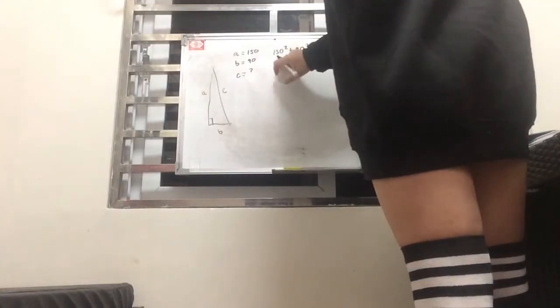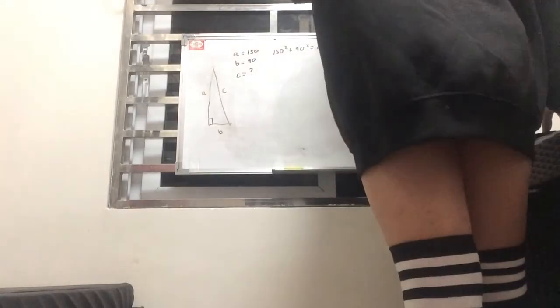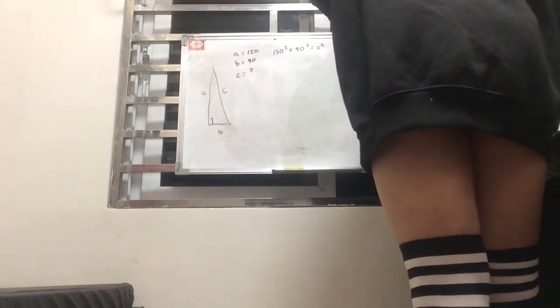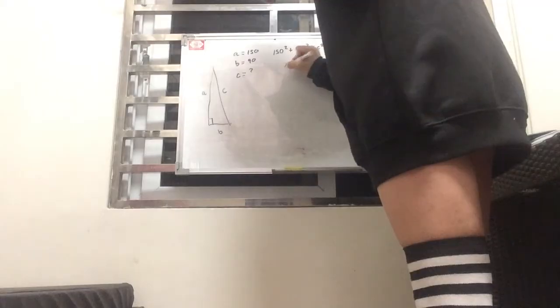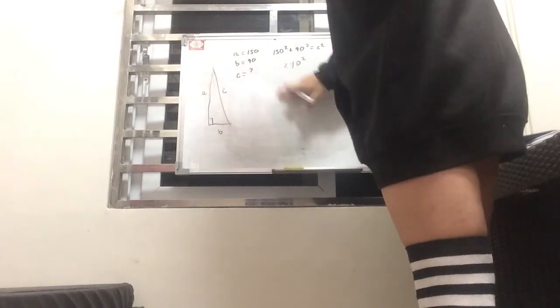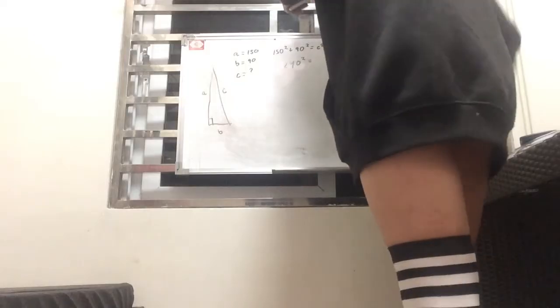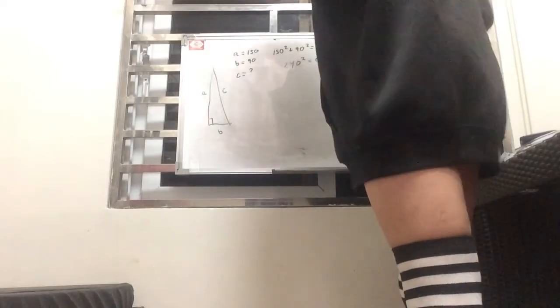So 150² + 90² = c². So what we do then is just add like terms. Using our calculator, 150 plus 90, that would be 240. 240² = c².